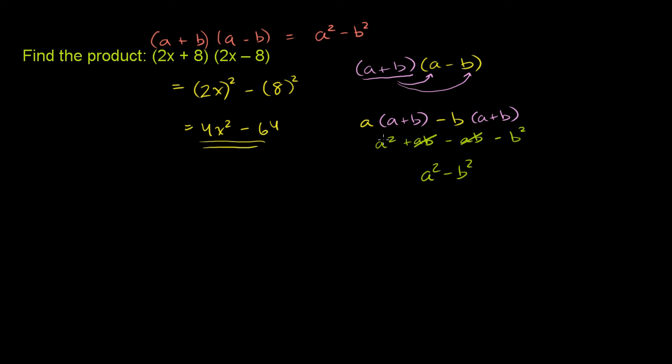So we could have actually done this little exercise with 2x plus 8 and 2x minus 8, and we would have gotten this. But it's needed just to see the general pattern. Any time you have a plus b times a minus b, it's going to be a squared minus b squared. In this case, a is 2x, so a squared is 4x squared. b is 8, so b squared is 64.